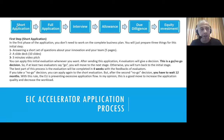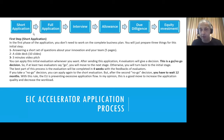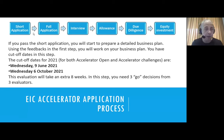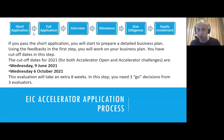One important thing: if you receive a no-go decision twice, you must wait 12 months before applying again. If you pass the short application and two of four evaluators say go, you proceed to the full application — a detailed business plan that you prepare using the feedback from the first step. In the short application phase, evaluators give feedback saying which points are good and which are not, which helps you improve your business plan before the full application.